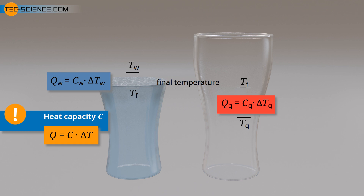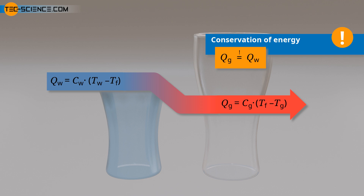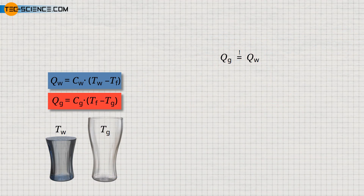The product of heat capacity and temperature change provides the transferred heat energy. The temperature differences can be calculated on the basis of the initial temperatures and the resulting final temperature. Note that the initial temperature of the water is greater than the final temperature, while the initial temperature of the glass is lower than the final temperature. The temperature differences in the two equations were therefore chosen to give positive values for the amounts of heat in each case. Since we assume there is no heat loss to the surroundings, heat energy can only be transferred between water and glass. Due to the conservation of energy, the heat released by the water exactly corresponds to the heat absorbed by the glass.